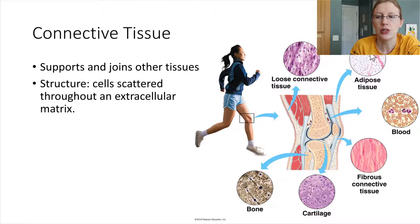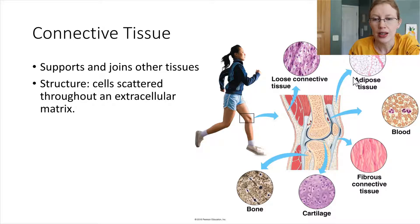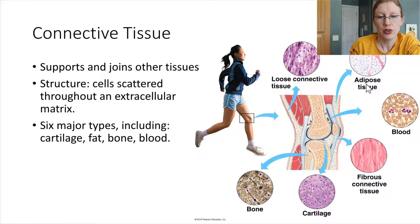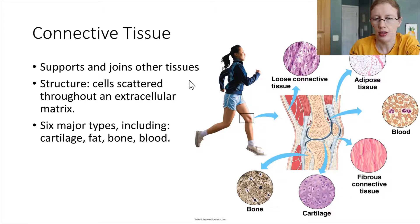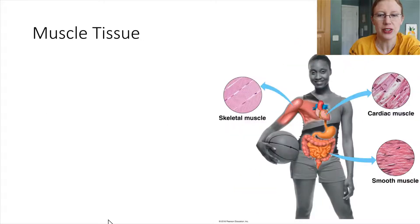Adipose tissue — this is fat. This is the name for fat tissue, and same thing, these cells are specialized to store lipids. In total there are six major types. And that's connective tissue — let's move right along.